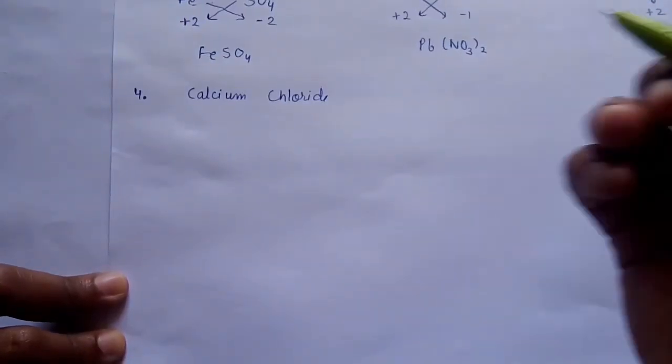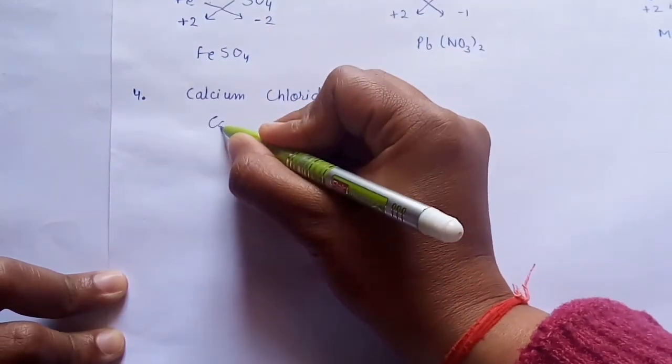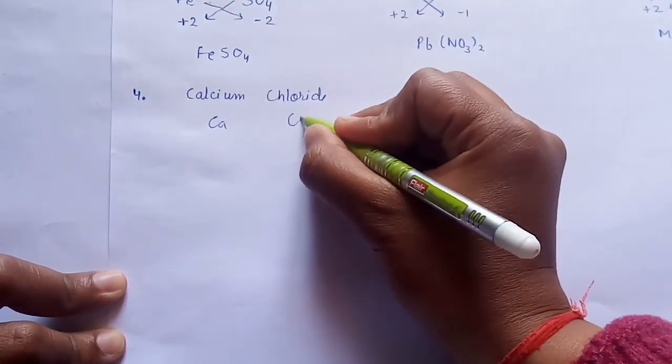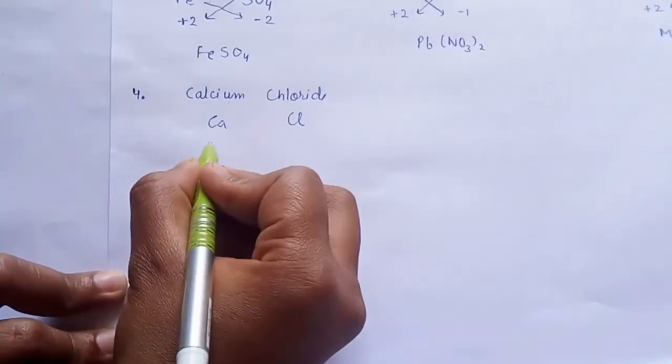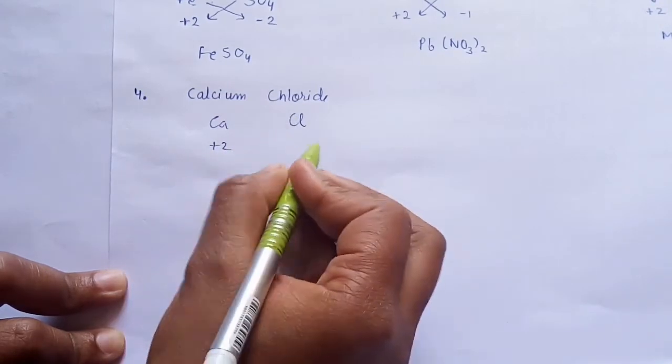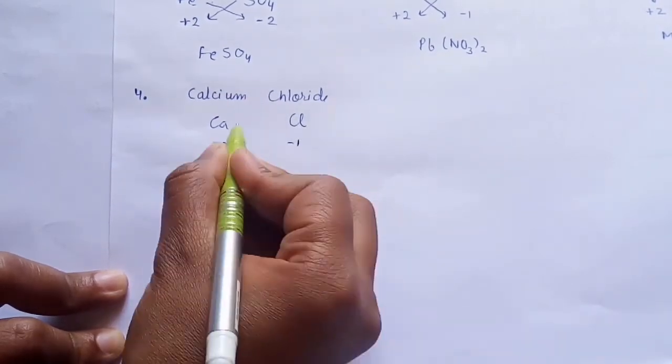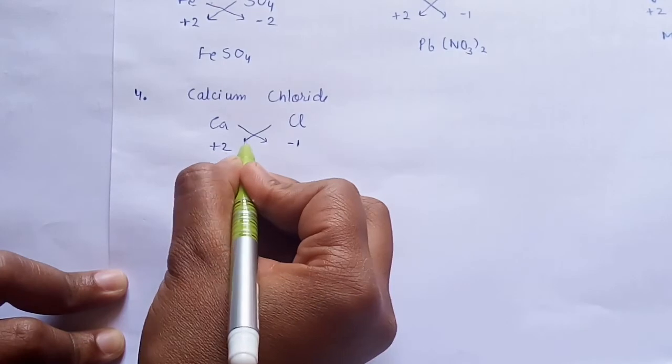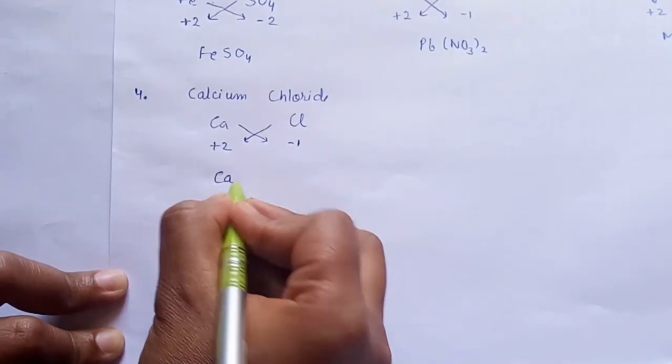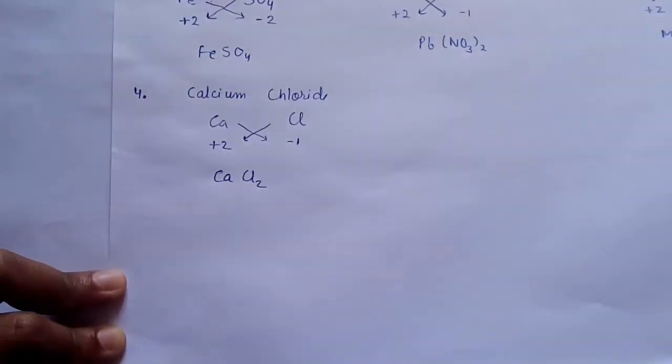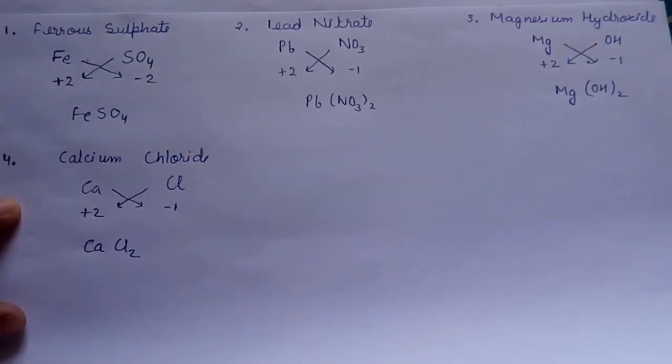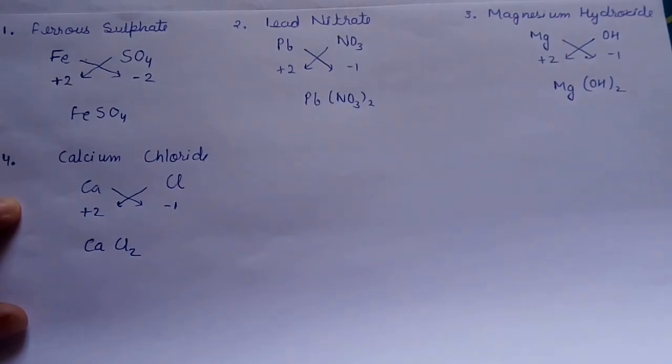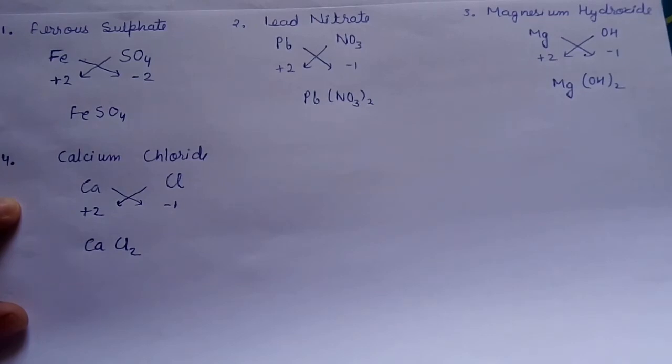One more example for you. It's calcium chloride. First, we will write symbol for calcium which is Ca and symbol for chloride which is Cl. Valency of calcium, it's plus 2 and that of chlorine, it's minus 1. Now, the formula will be CaCl2. We don't need to write 1. Okay, students. Now, you must have understood how to write the formula of various compounds and I shall give you some compound for practice.